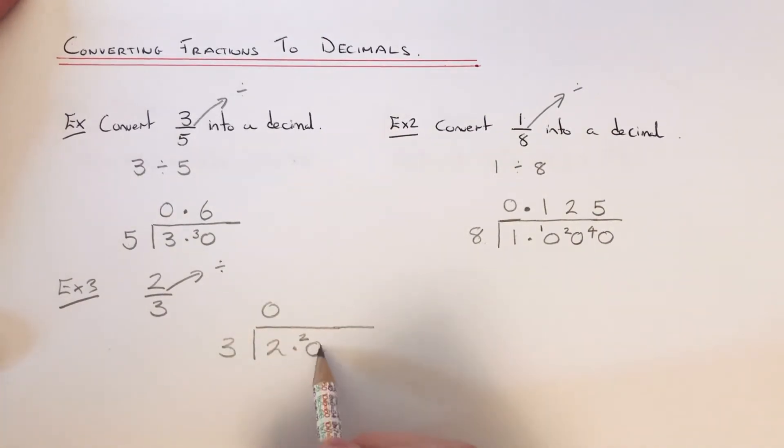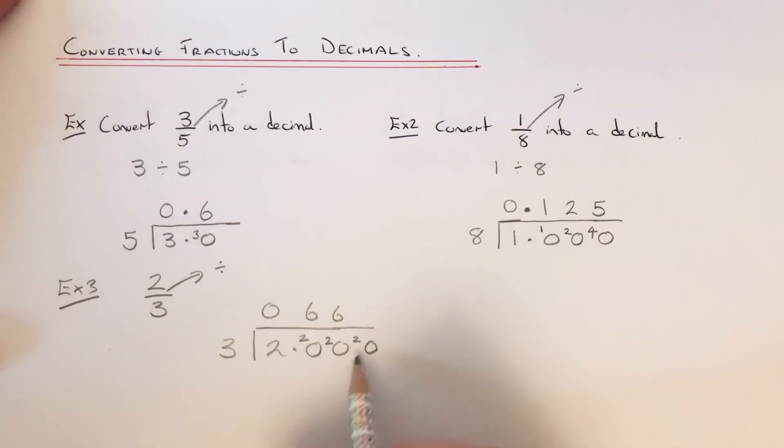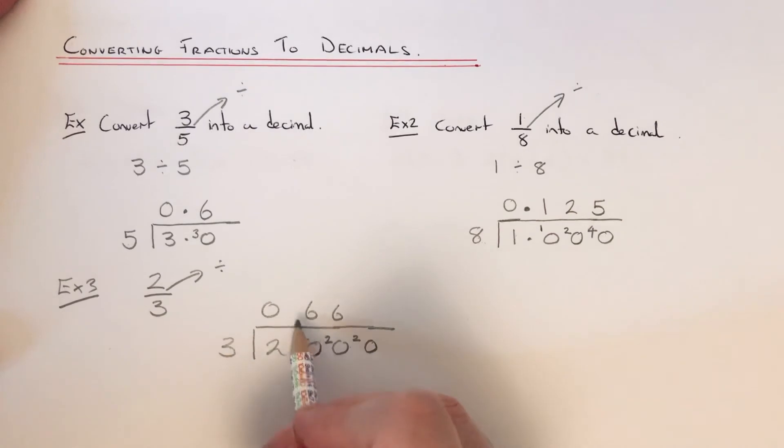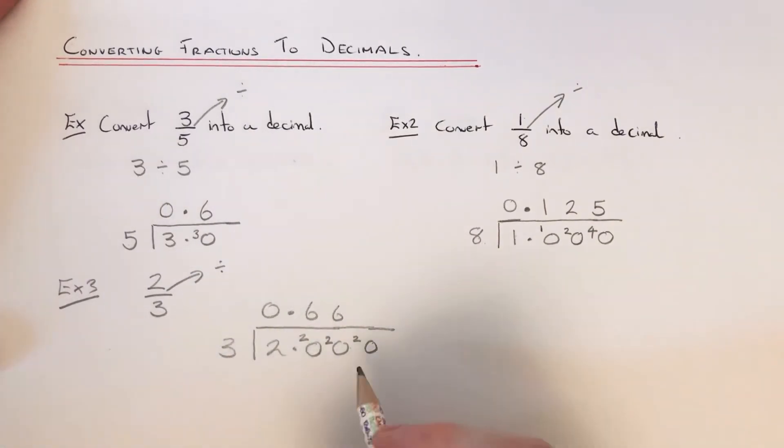We've got 20 divided by 3, so that goes 6 times with a remainder of 2. Then 3 into 20 again, it's 6 remainder 2. This is just going to keep going on forever. So what I'm going to do is put my decimal point in here to make it a decimal, so it's 0.66 and it keeps repeating this 6. What you can do is just write it as 0.6 and put a dot on the top of the 6 to say that it's recurring.